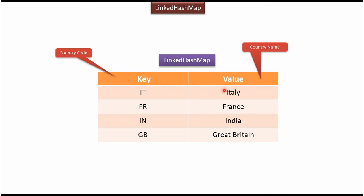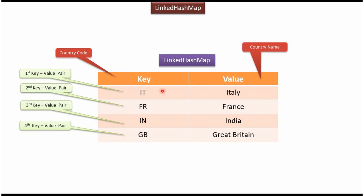For key 39, the corresponding value is Italy. For key 33, the corresponding value is France. For key 91, the corresponding value is India. For key 44, the corresponding value is Great Britain. This is the first, second, third, and fourth key-value pair, and each key-value pair is called an entry.